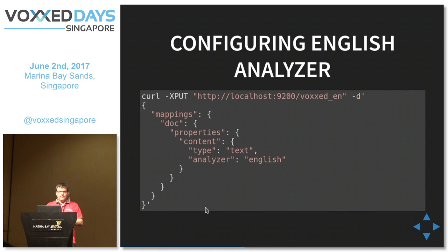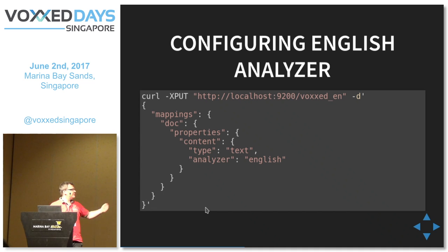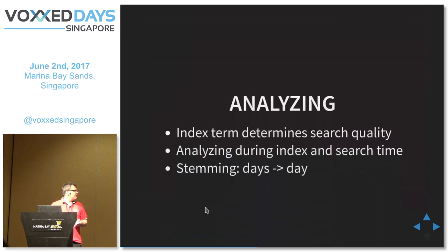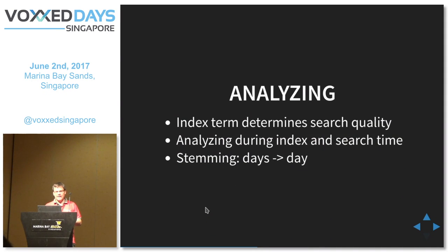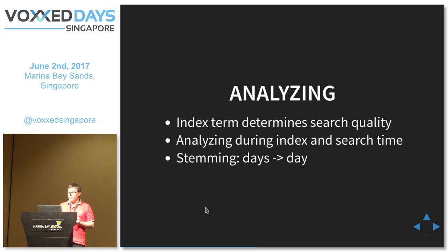Here is one example for configuring an English analyzer. We do a PUT request which creates an index, giving it a name — VoxEN. Then we pass in a mapping, which is like the schema for the documents, and we tell Elasticsearch for the content field to please use the English analyzer. This allows language-specific searches — for example, "days" and "day". You can search for "day" and find content that also has "days", giving the user the impression of an intelligent search. The index term determines the search quality, so what you do during analyzing heavily influences how good your application is at searching. Analyzing is done both during index time and search time.